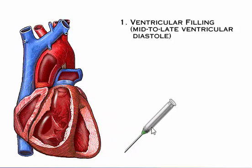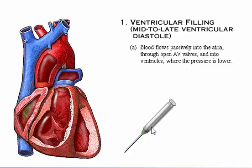The first phase of the cardiac cycle is ventricular filling, which occurs during mid to late diastole when the heart chambers are relaxed. Blood flows passively into the atria, through the open AV valves, and continues into the ventricles.